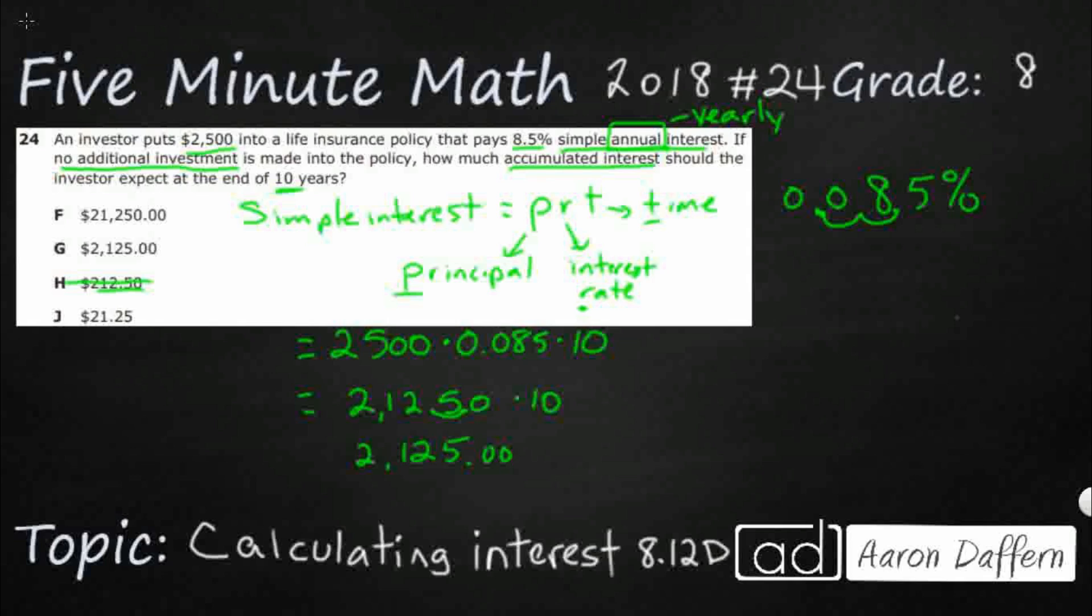We could put a point zero zero if we need to, that's how much interest we are going to get. So that's going to be our answer G right there. If you were to divide by 10, that's what you would get if you were to do J. So just use the wrong operation, you would get that, but our answer here is G.